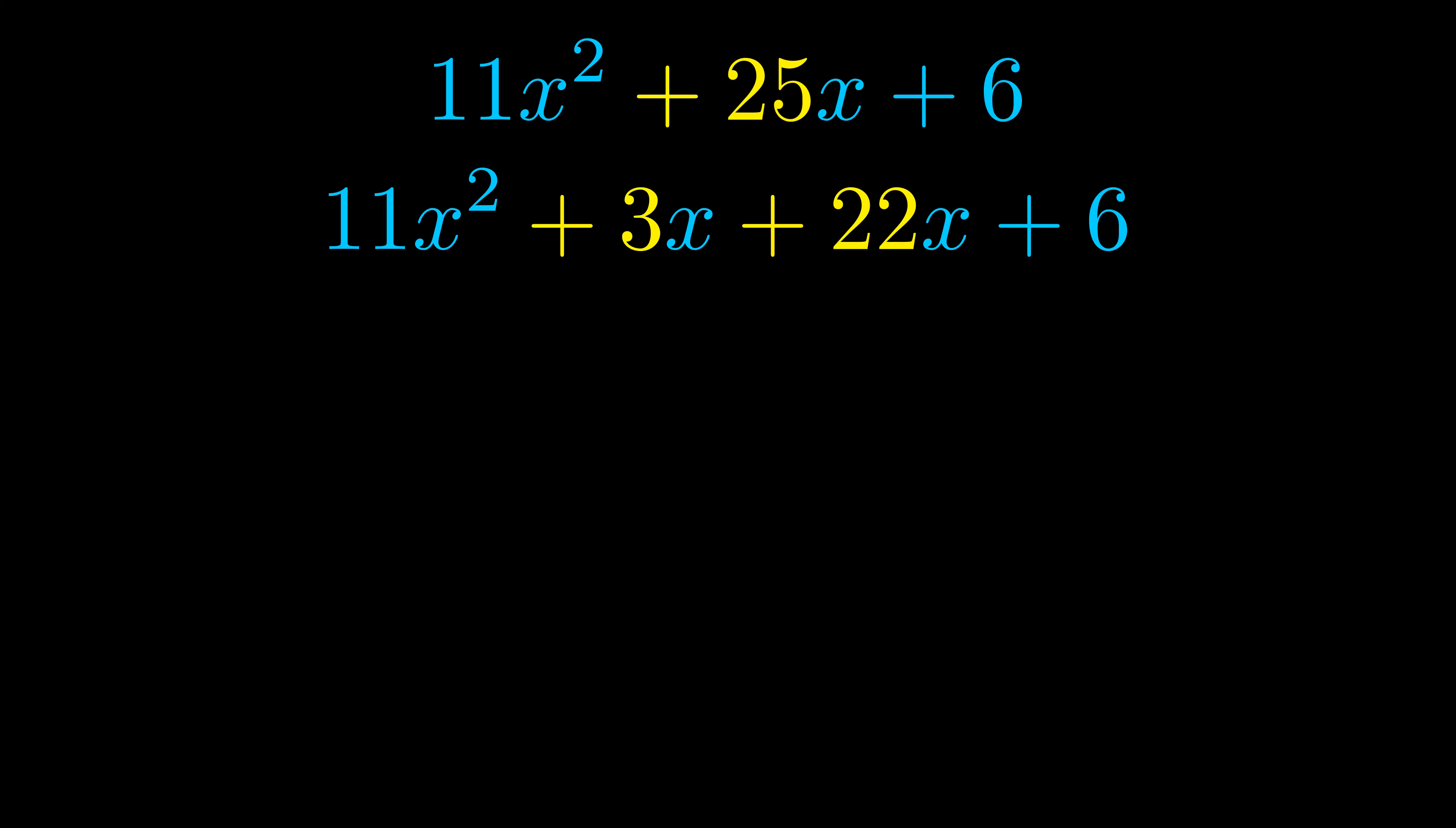Once we've done this we go ahead and we put parentheses around the first term and the last term and we do that so that we can take the greatest common factor out of both terms.